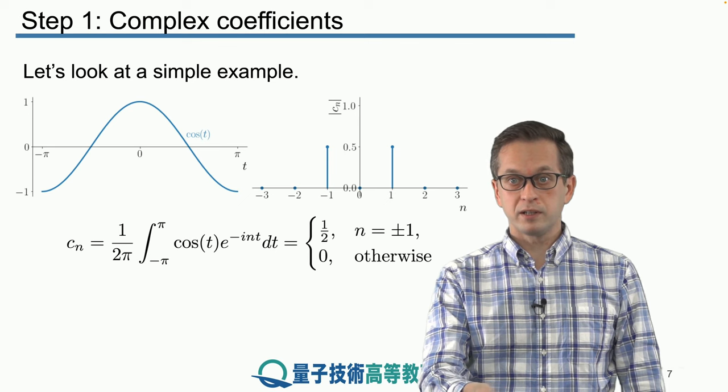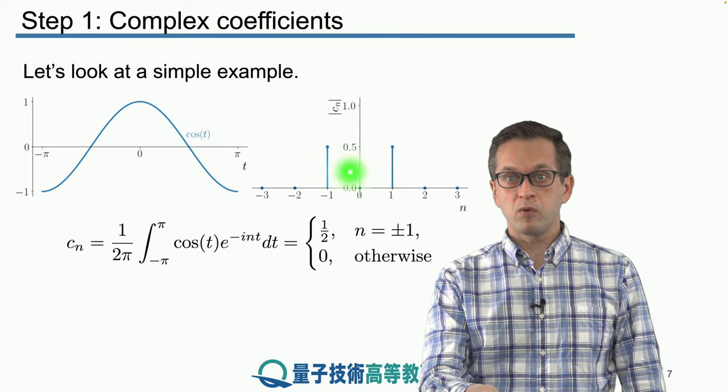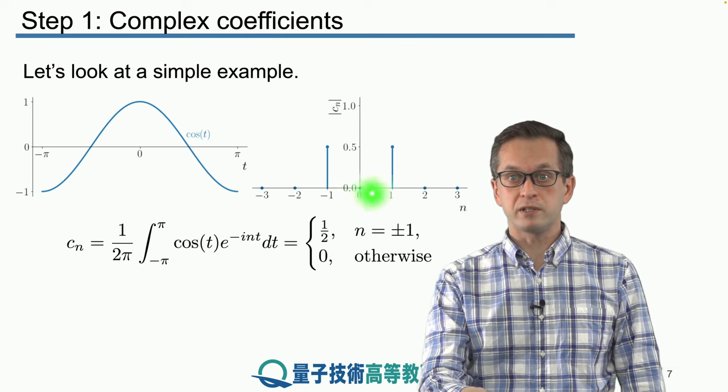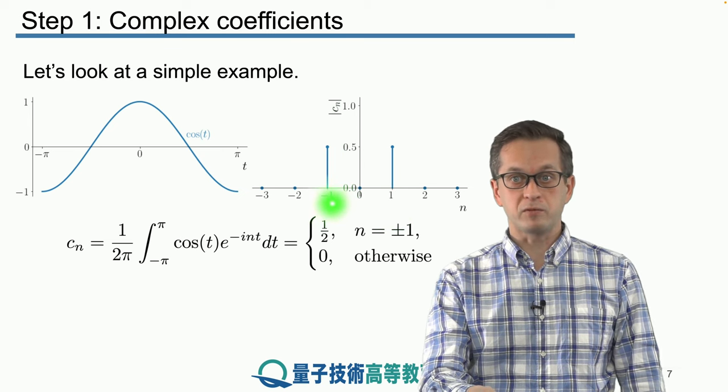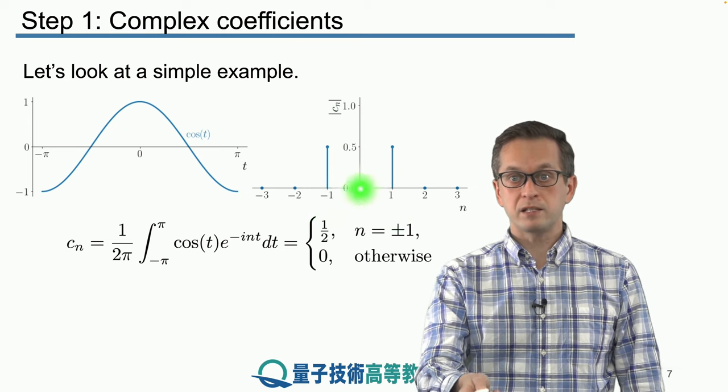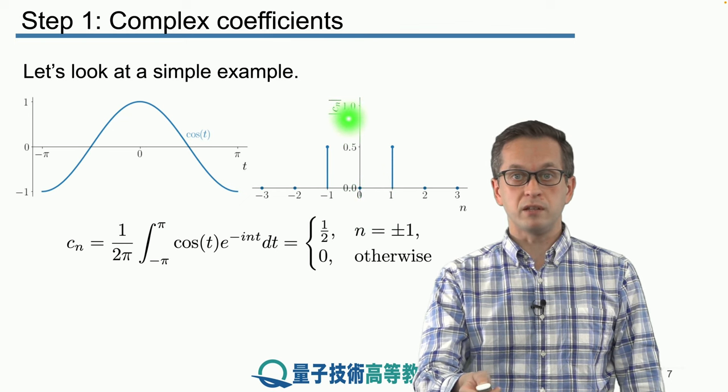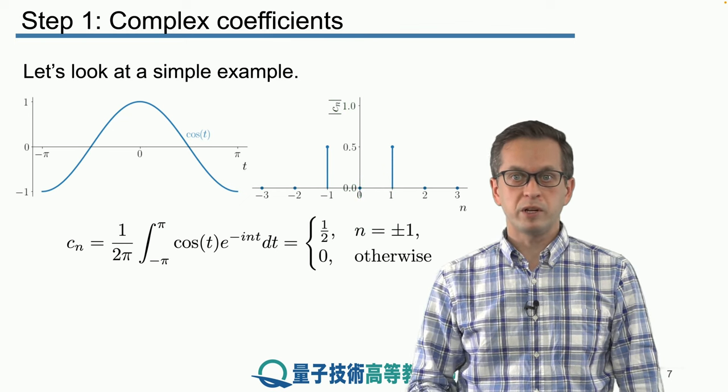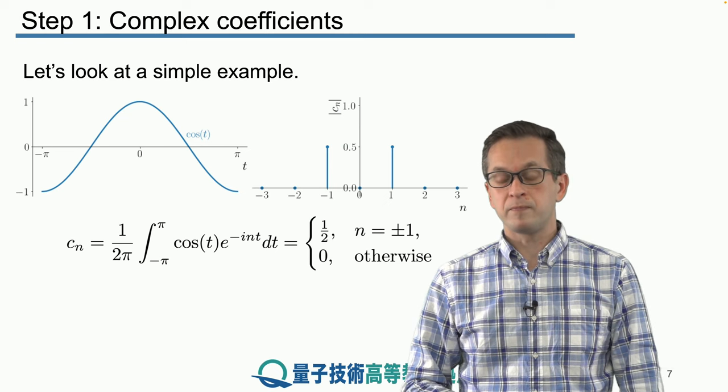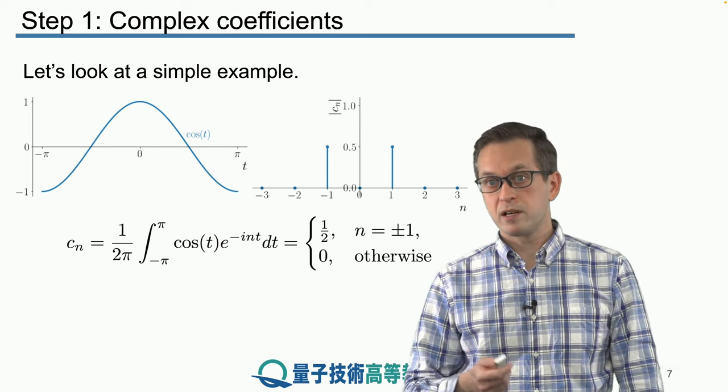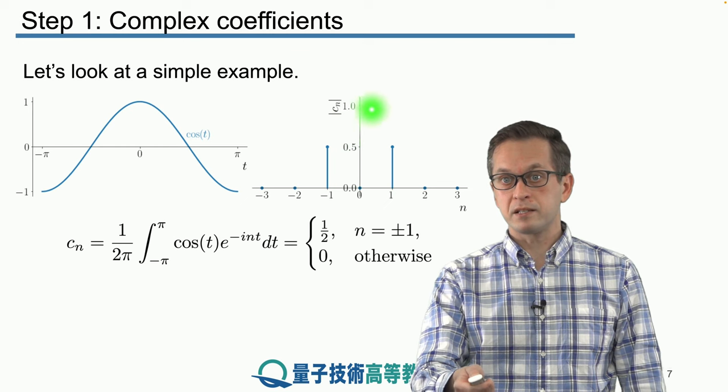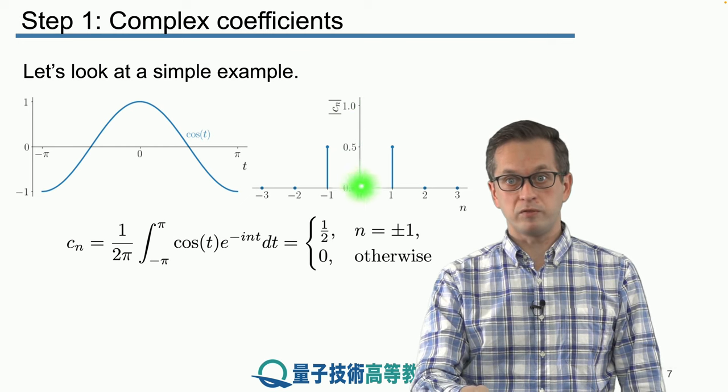So if you plot it like this, we only have two contributions to the Fourier series. When n is equal to 1 and n is equal to minus 1. And here on the vertical axis, we are plotting the absolute value of the coefficient cn. In this case, it doesn't really matter because they are real anyway. But for later, when they become complex, just bear in mind that the vertical axis represents the modulus of the complex number.